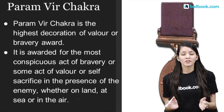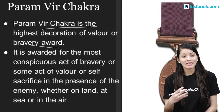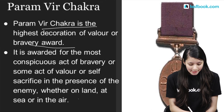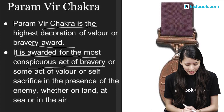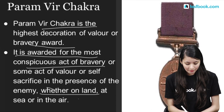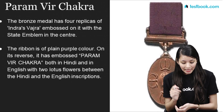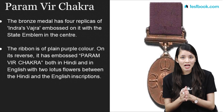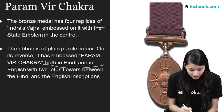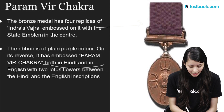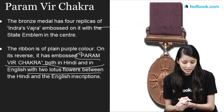The Param Vir Chakra is the highest decoration for bravery, awarded for the most conspicuous act of bravery in the presence of the enemy, whether on land, at sea, or in the air. This is a bronze medal with the state emblem and Indra's four replicas, as you can see on screen. Its ribbon is of purple color. On its reverse side, 'Param Vir Chakra' is embossed both in Hindi and English, with two lotus flowers between the inscriptions.